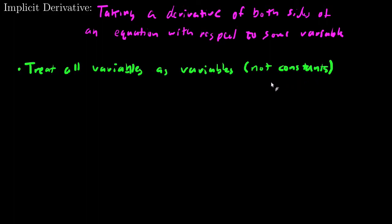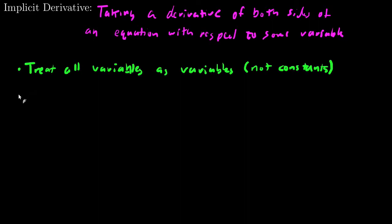So just because I'm taking the derivative with respect to x, if I see an r there, that can still be a variable, so I shouldn't consider that its derivative is 0. If I see a pi, that's a constant, and I take the derivative of that and have it be 0. The second thing is this.